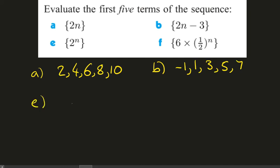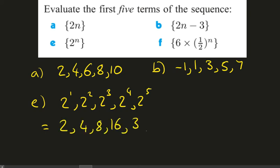In E, we're going to have 2 to the 1, followed by 2 squared, followed by 2 cubed. When we just swap out that N for 1, 2, 3, 4, and 5, we'll have 2 to the 4 and 2 to the 5. And I guess we better write this a bit nicer than that. This is going to be 2, 4, 8, 16, 32.